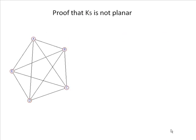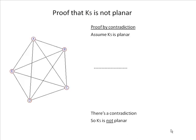Start off with K5. The proof that K5 is not planar is a proof by contradiction. We assume that it is planar. We do some calculations and find that there's a contradiction in our working, so K5 is not planar. That's the structure of the proof. Now let's actually do it.